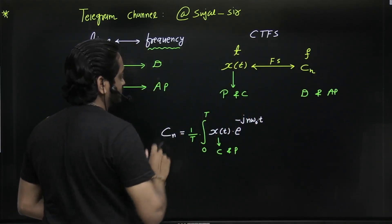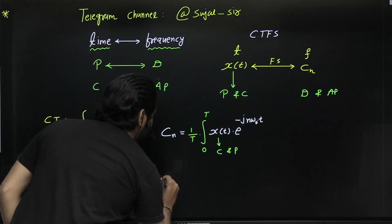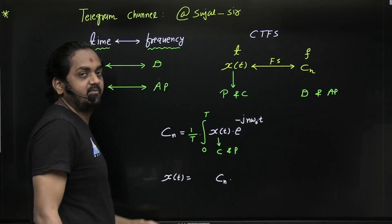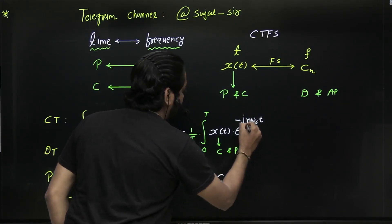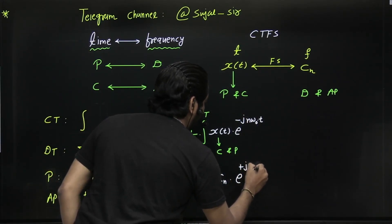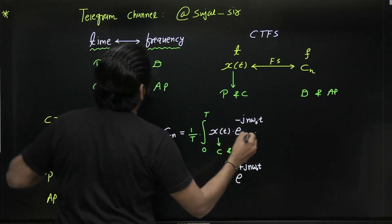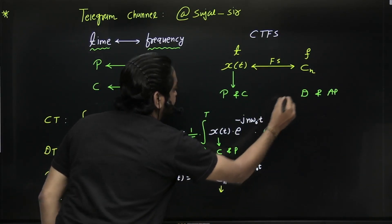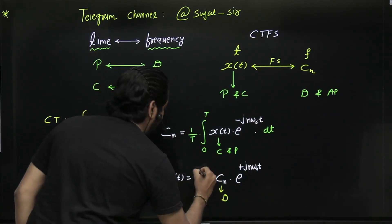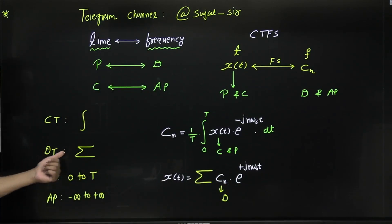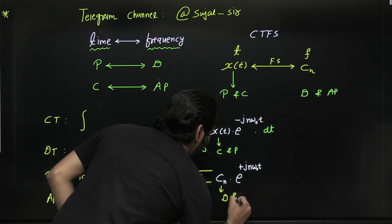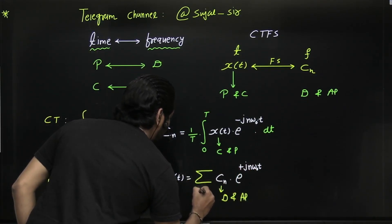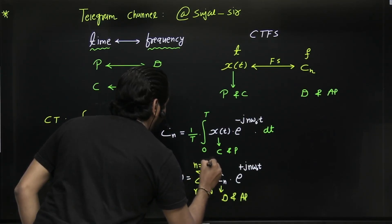For the inverse — finding X(t) from Cn — this is the exponential Fourier series: X(t) equals the sum of Cn multiplied by e to the power of plus j·n·ω₀·t. Since Cn is discrete, summation comes into picture. Since it is aperiodic, the summation limit is from minus infinite to plus infinite, with n as the variable.